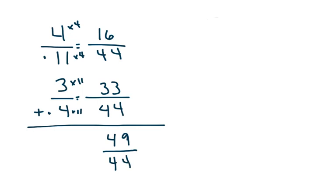On Evolve, 49/44 will be an answer, but you will also need — where it says select all that apply — to change it to a mixed number, which we did last week. That's 49 divided by 44: 44 goes into 49 one whole time, giving you 44, so you get five left over, and the bottom number is 44, making it 1 and 5/44. If you can't remember how to change an improper fraction to a mixed number, you need to go back and review the notes from last week.